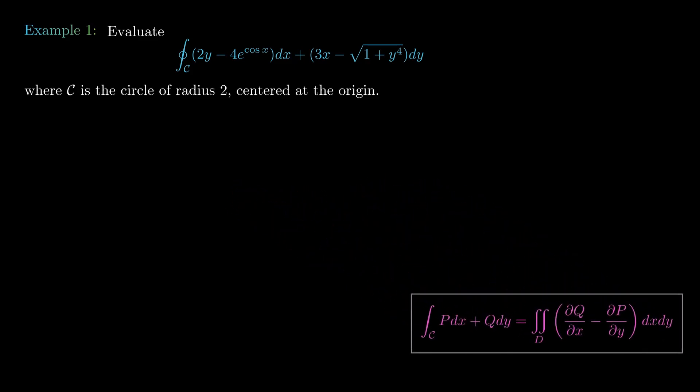In our example, we have that p is 2y minus 4e to the cosine x, and that tells us that partial p partial y is just 2. We have that q is equal to 3x minus the square root of 1 plus y to the 4, and so partial q partial x is just going to be 3.